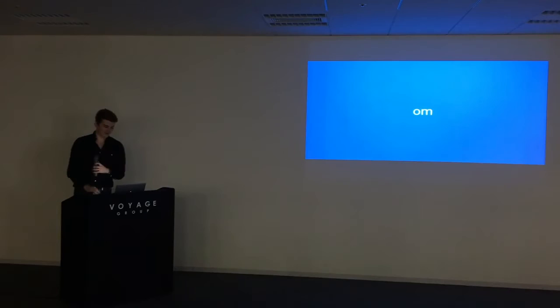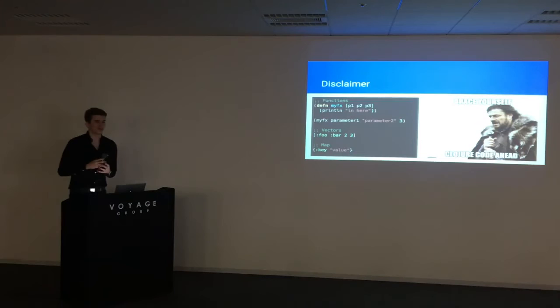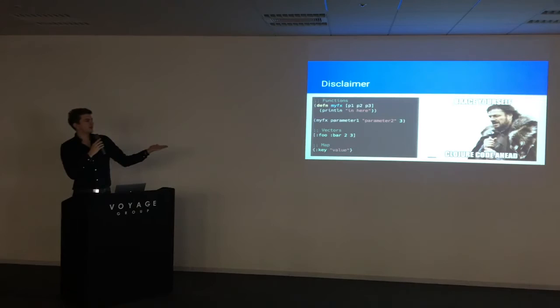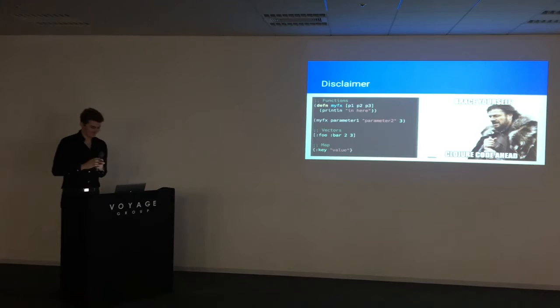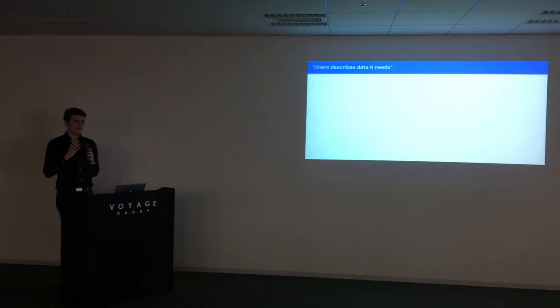So before I go into details — warning, there's ClojureScript. If you never saw ClojureScript before, it's a Lisp dialect. Here's a short example of how you can describe a function, how you can call a function, how you can define a vector — which is basically a kind of array that works a little bit differently but can be used the same way — and a map, which is a dictionary.